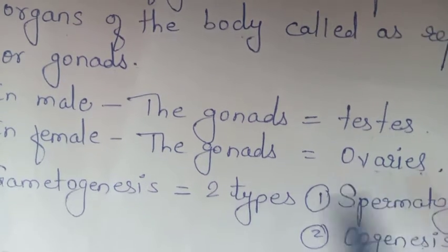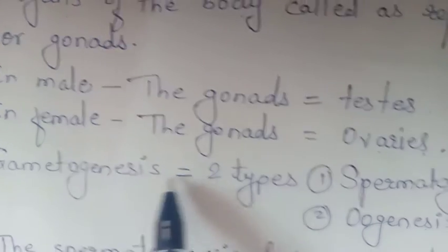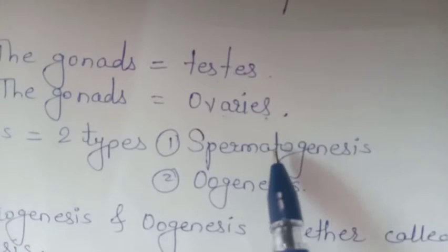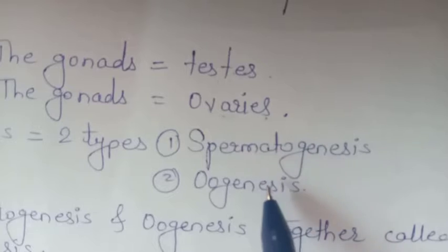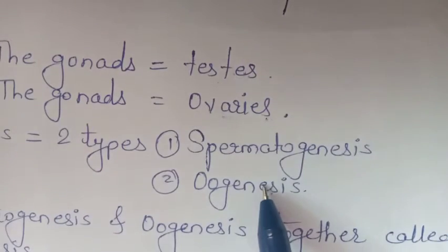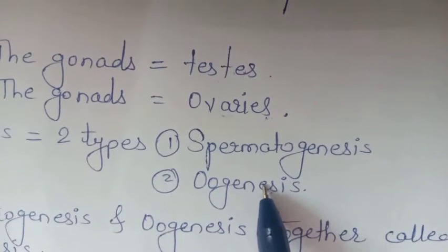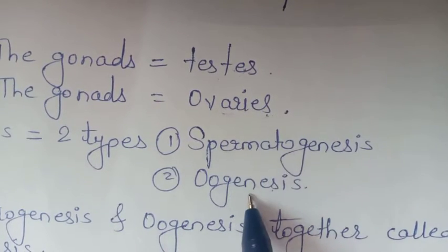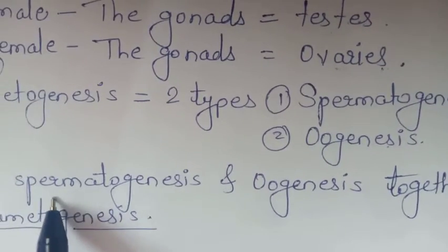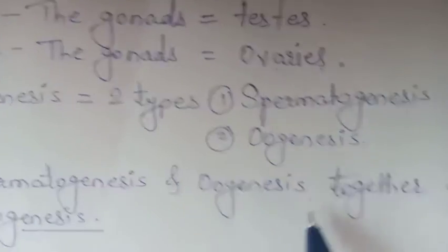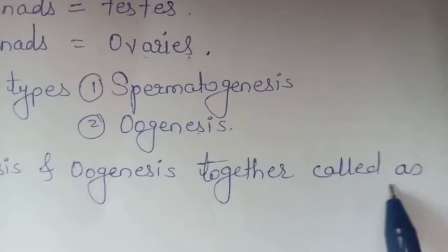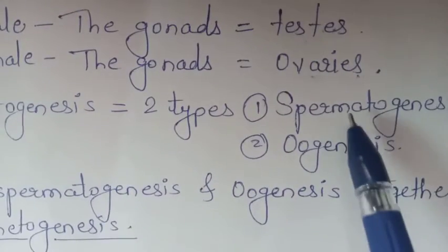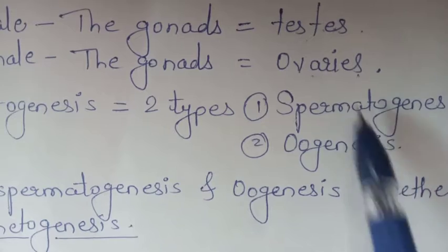Gametogenesis is of two types: spermatogenesis and oogenesis. Spermatogenesis and oogenesis together are called gametogenesis.